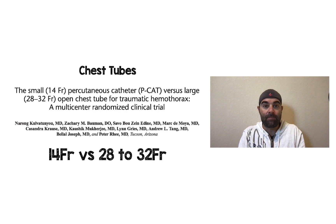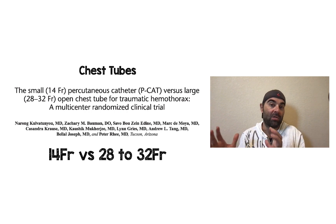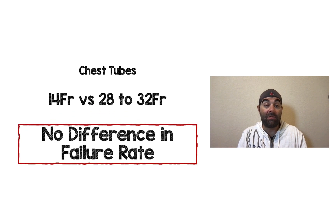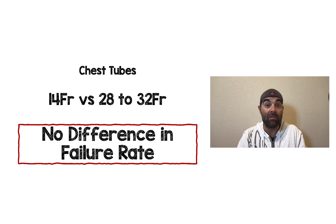The second study is about chest tubes — specifically a 14 French percutaneous catheter, called the PCAT, versus a large 28 to 32 French open chest tube for traumatic hemothorax, in a multi-center randomized clinical trial. They found no difference in failure rates. The concern with smaller chest tubes is always that they will clot. We know from the pneumothorax literature there are fewer complications and less pain for the patient with smaller tubes. I think we're getting smaller and smaller as time goes on, and this is becoming an important component of care for the trauma patient.